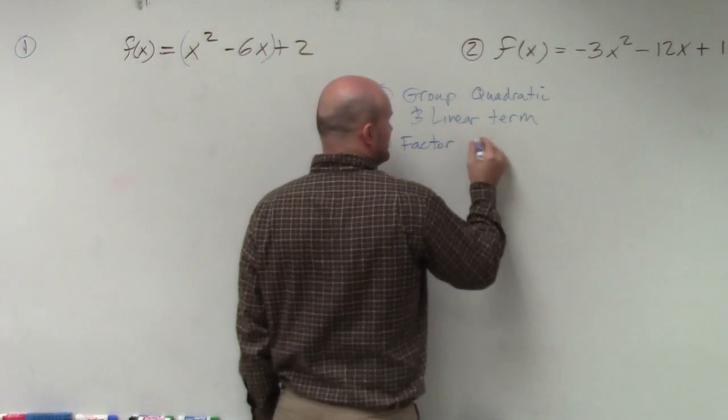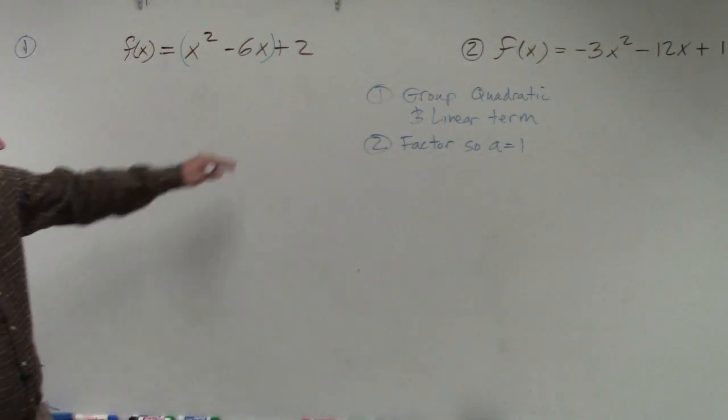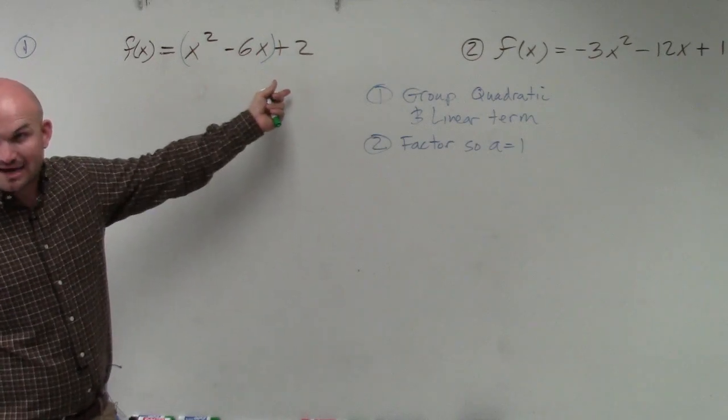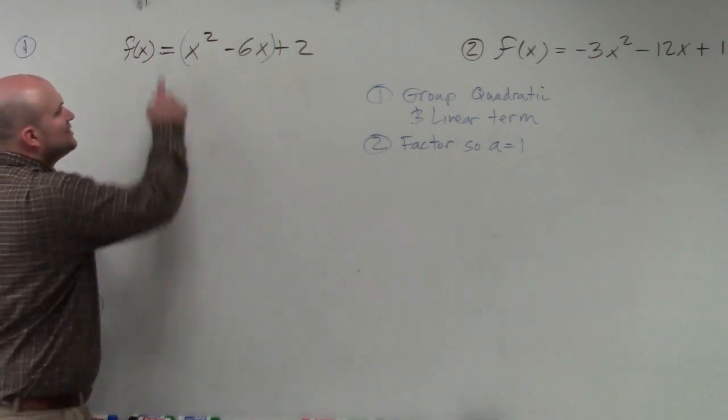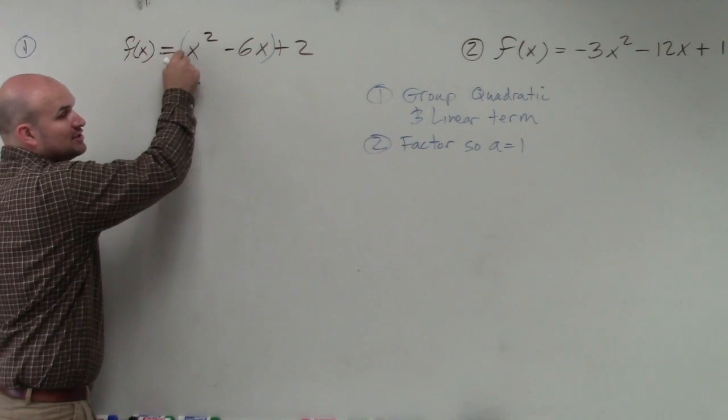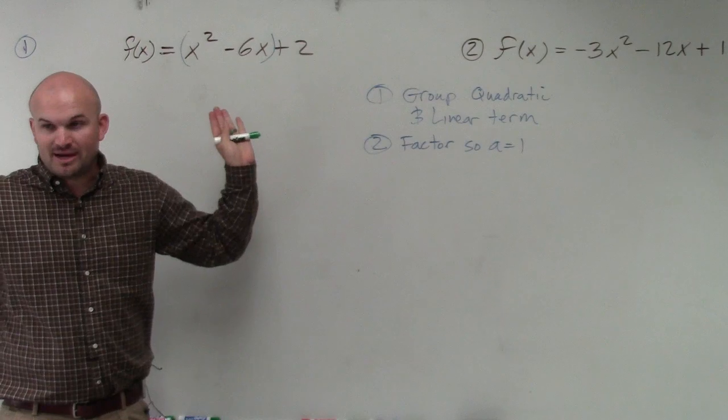Second, factor so your a is equal to 1. Notice I didn't say factor out the greatest common factor, because they always are going to have x in common. I only want you to factor if a, which is the coefficient of your quadratic term, is not 1. But a is 1 in this case.